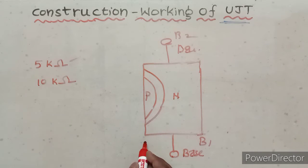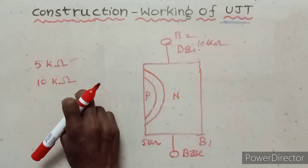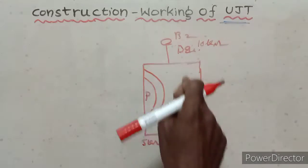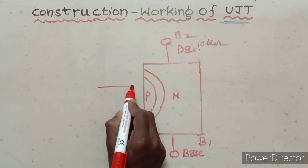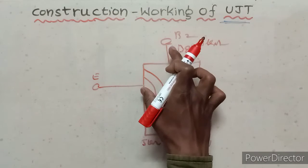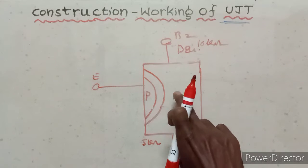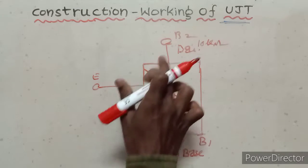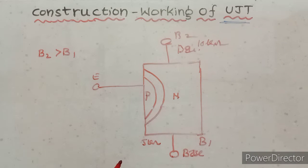B1 has a resistance of 5k ohms and B2 has 10k ohms. In this double base diode, the emitter is closer to B2 than to B1. So the distance between the emitter and B1 is large, while the distance between the emitter and B2 is small. Therefore, the resistance of B2 is greater than that of B1.